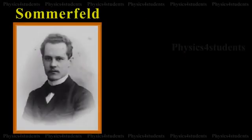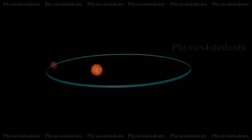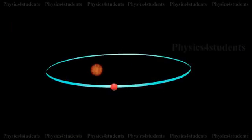Students, we are going to study about Sommerfeld's explanation of spectral lines. Before this, there was only one quantum number. Sommerfeld explained that around the nucleus, electrons revolve not only in a spherical shell but also in an elliptical orbital.